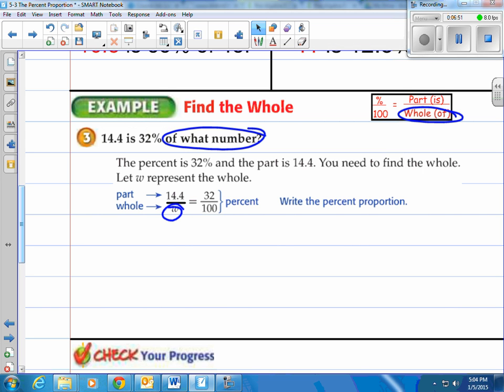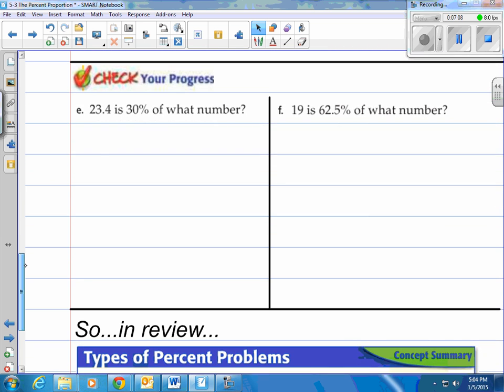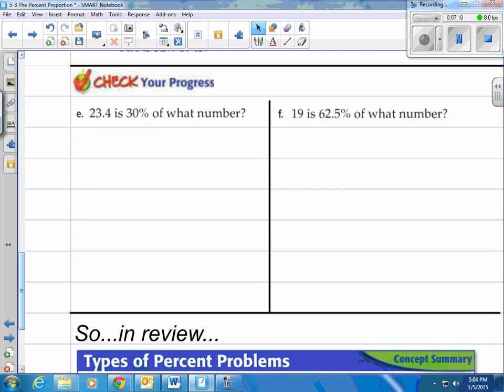14.4 is the part, then we take 32%, and we write that as 32 over 100, and then of course, do our cross-multiplying and solve. So we get 45. So 14.4 is 32% of 45. Again, it's all the same formula, you just have to put the numbers in the right spot. Question mark is what you're looking for.